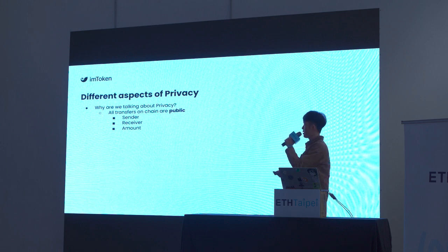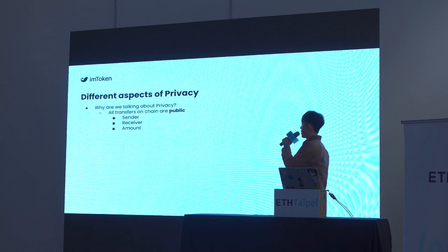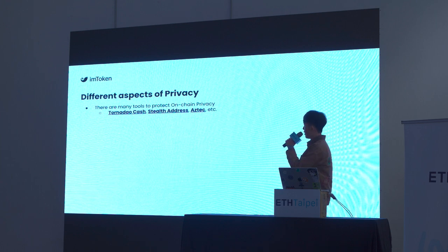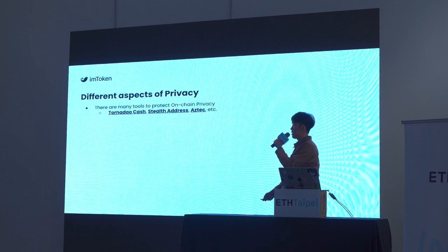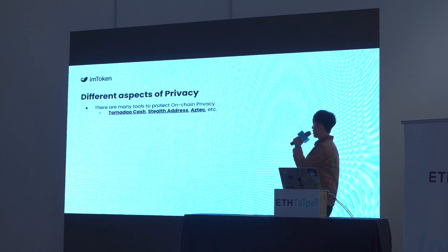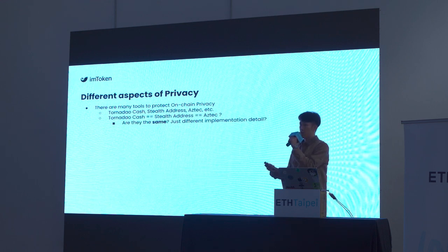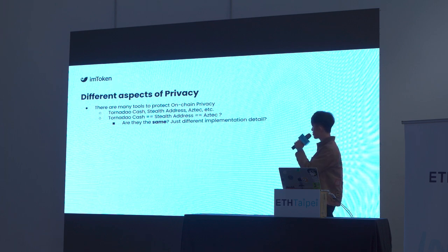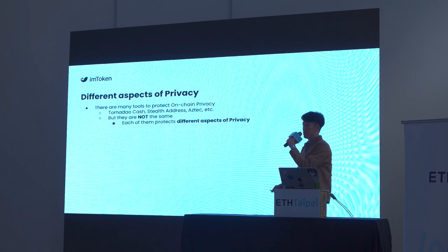Why are we talking about privacy? All transfers on-chain are public — this includes sender, receiver, and even the transfer amount. That's why we need privacy. There are many tools to protect on-chain privacy: Tornado Cash, stealth addresses, and Aztec. They all protect privacy, but they are not the same — each protects different aspects of privacy.